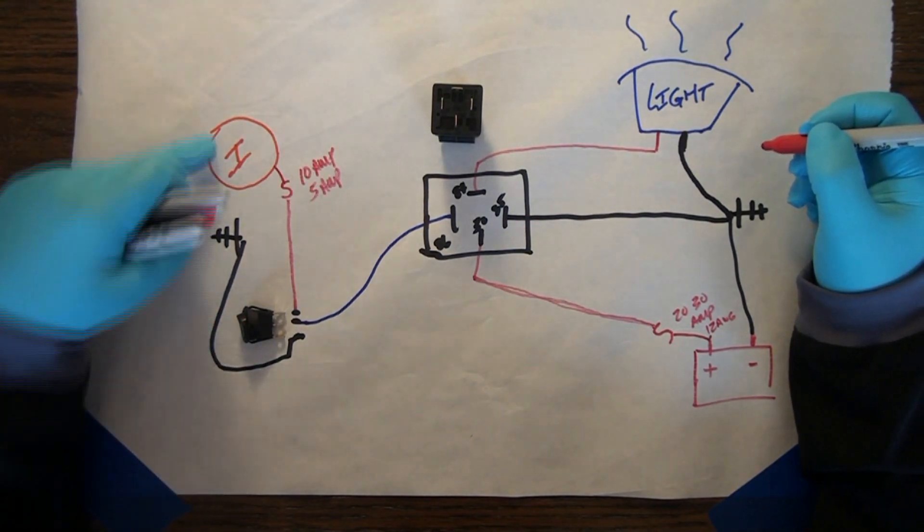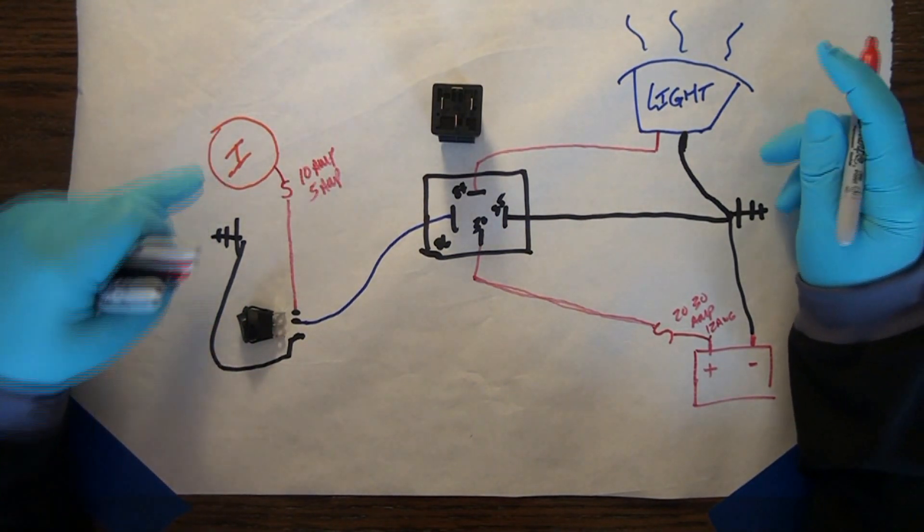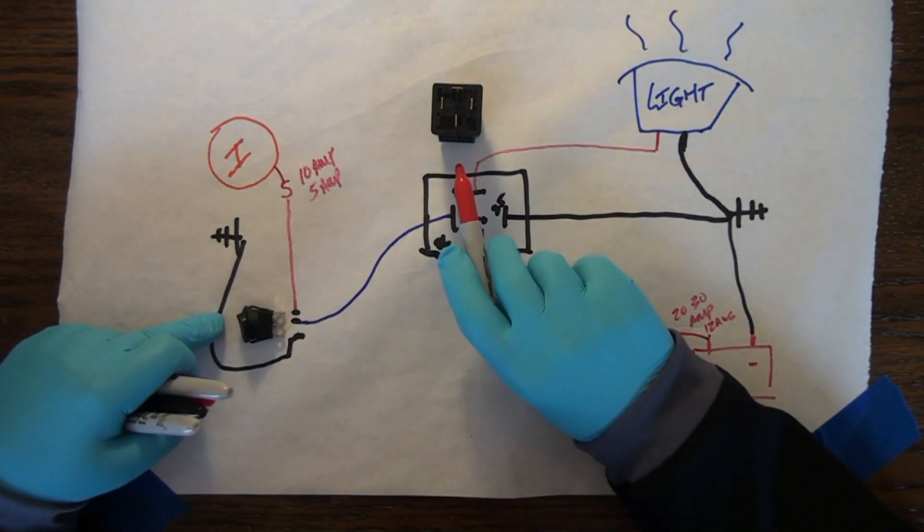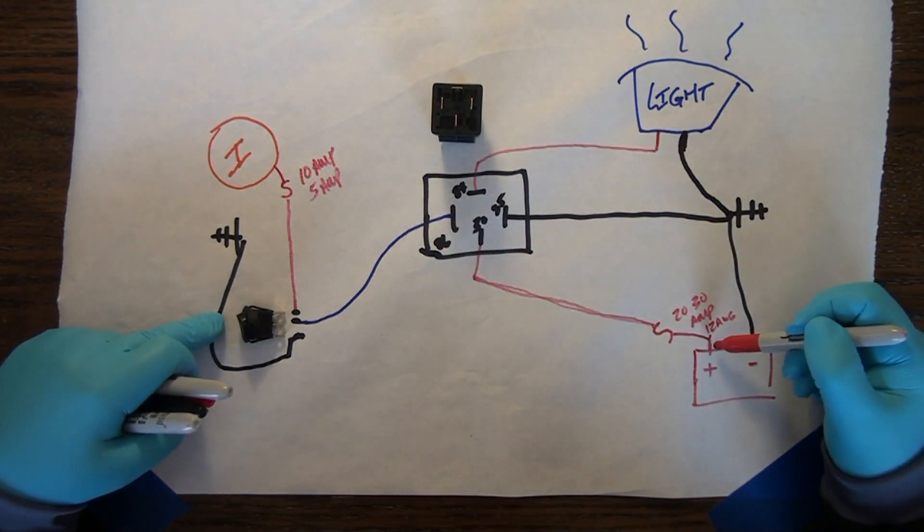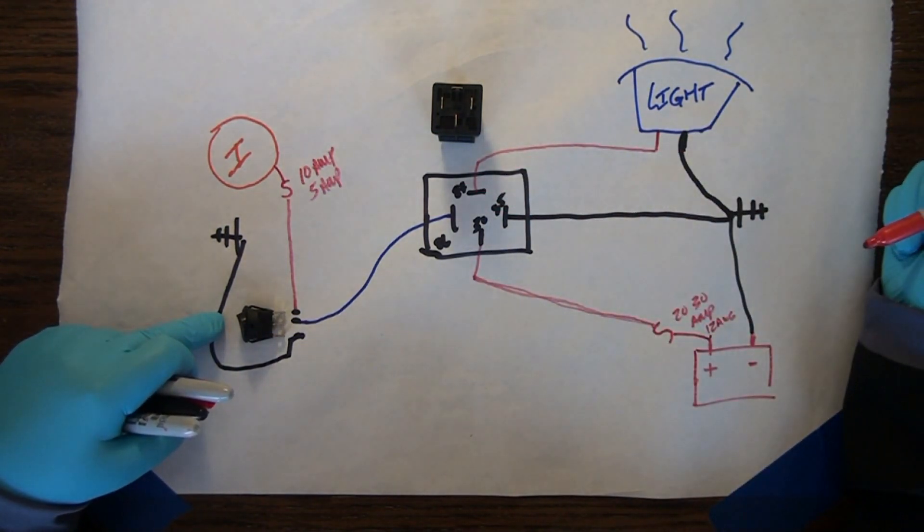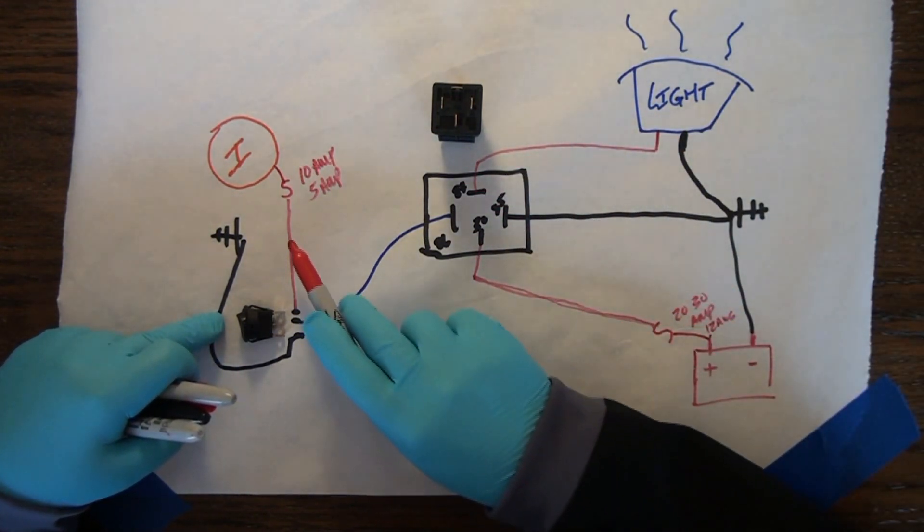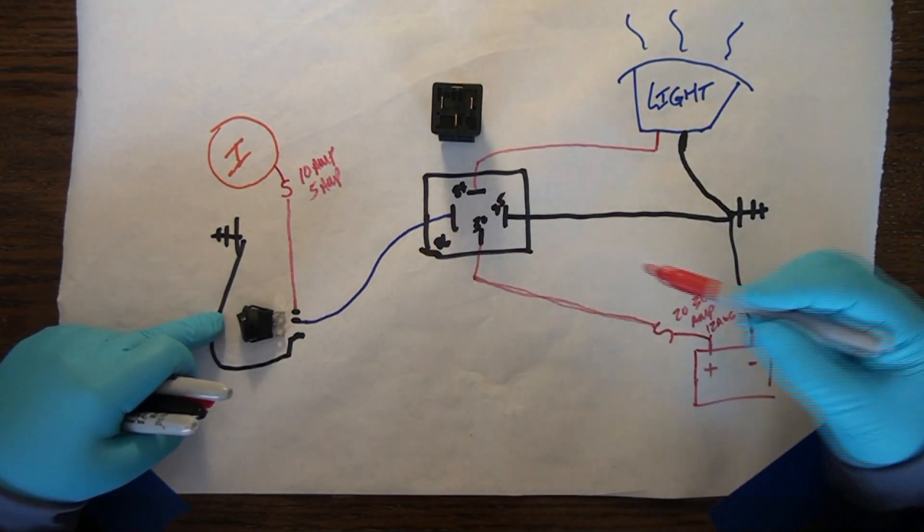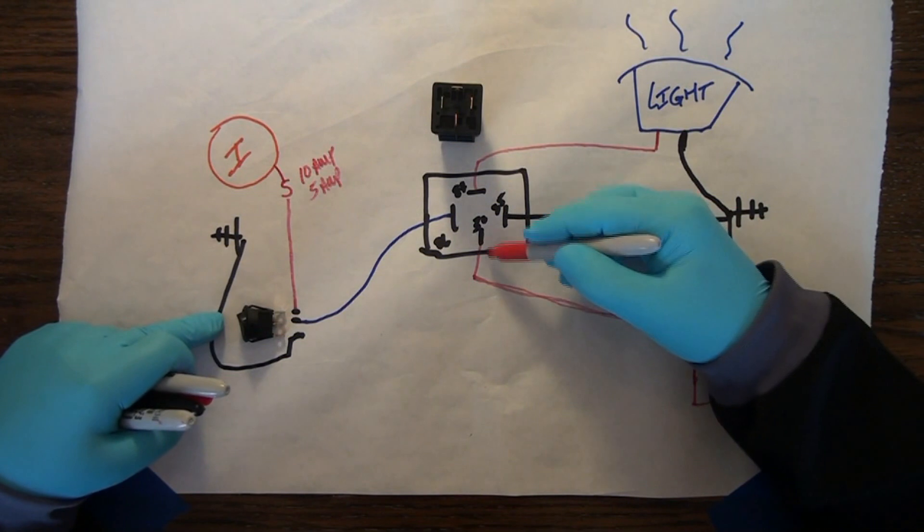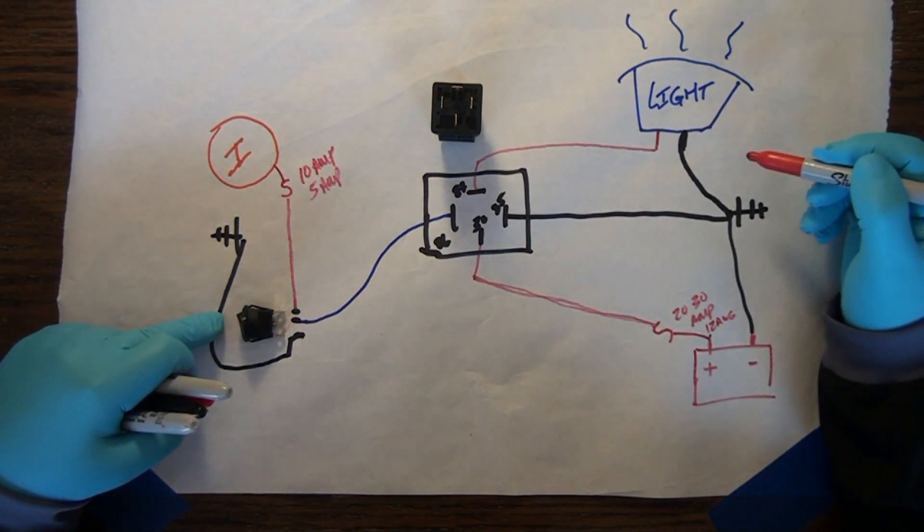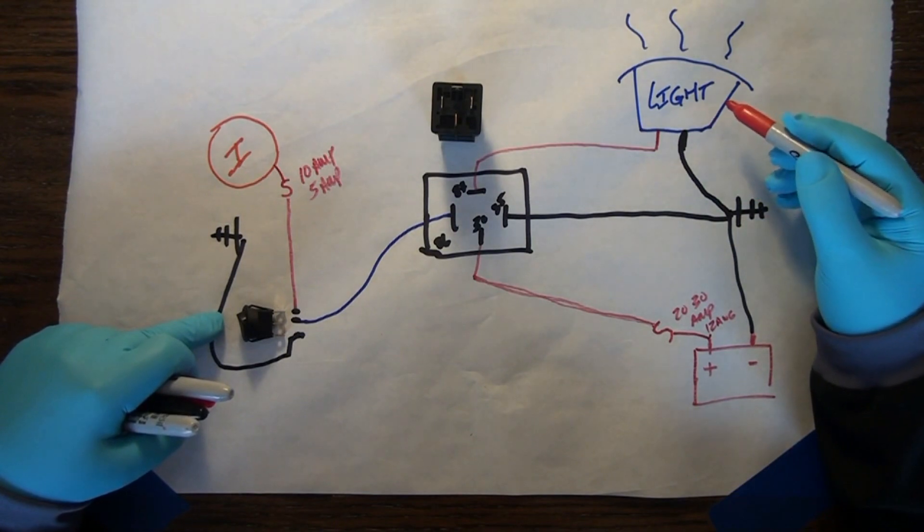When you turn the ignition on, you will power the switch. When you turn the switch on, you'll power the relay to close and allow electricity from the battery to flow through the relay and turn your light on. You're going to use five amps of electrical current to allow 20 or 30 amps of electricity to power your light or accessory.